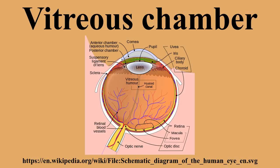The vitreous chamber is a structure within the vertebrate eye. There are considered to be three chambers: anterior, posterior, and vitreous. It is important to note that the eye can also be classified as having two cavities: anterior and posterior.